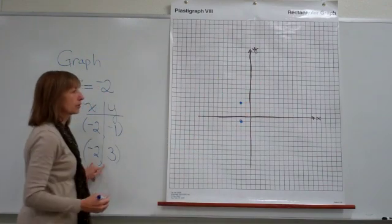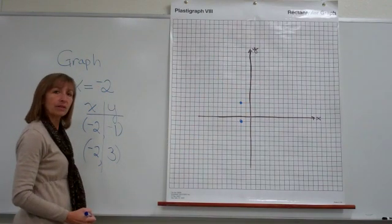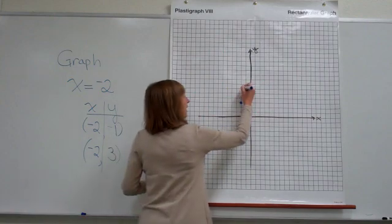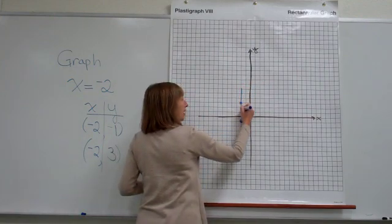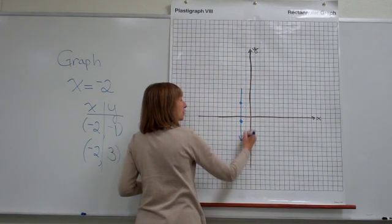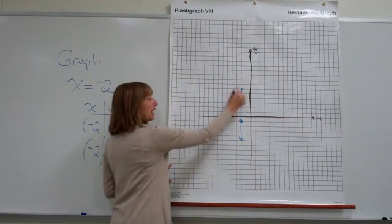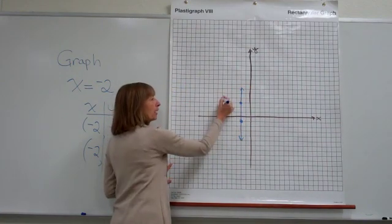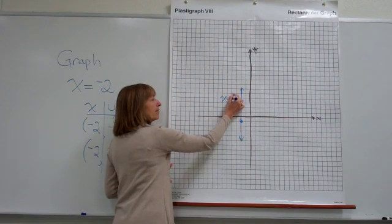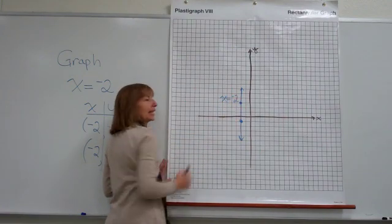So there are our two points that determine the line. When we line these up and carefully graph them, we get a vertical line of all the ordered pairs for which x equals negative 2.